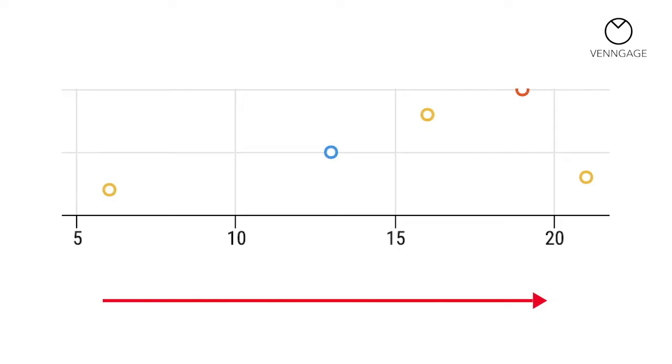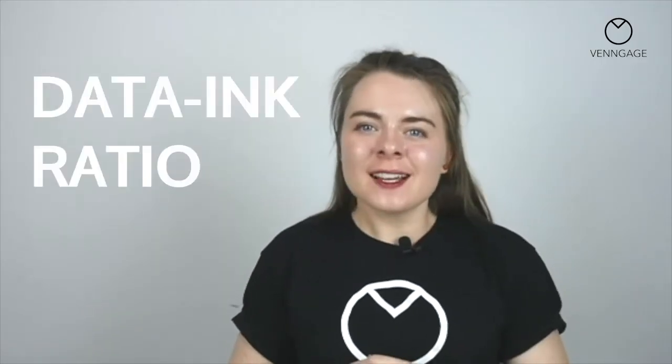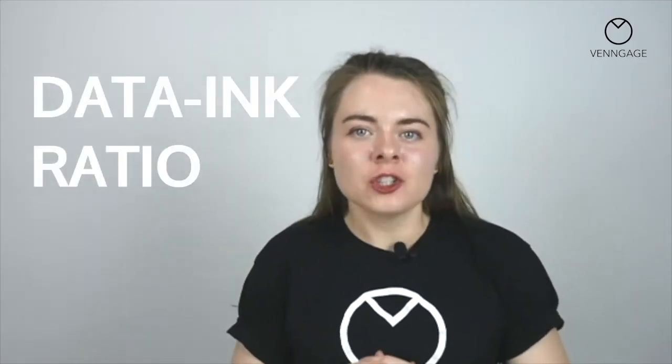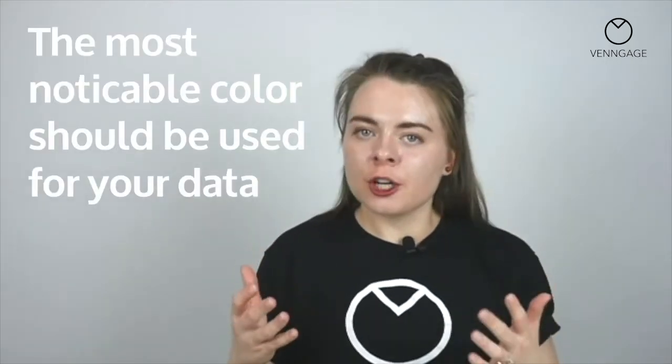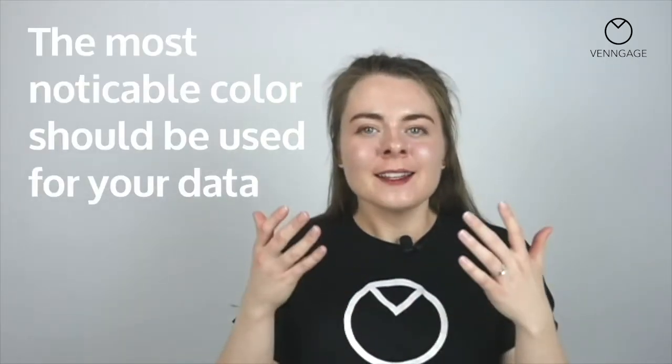If you do have to start your chart axes on a number other than zero, then A) have a good reason for it, and B) make sure that the intervals between the ticks on your chart are consistent — this will help prevent your data from being skewed. You may have heard of the data visualization guru Edward Tufte. He coined the term data-ink ratio to emphasize the importance of minimalism in chart design. Basically, the most noticeable colors in your chart should be used to highlight the data.